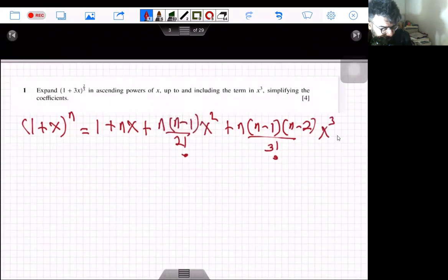And this goes on to infinity because in this case, in P3 binomial expansion, this n is supposed to be either a fraction or a negative integer. So in such cases there are infinite terms in the binomial expansion.